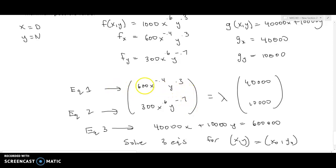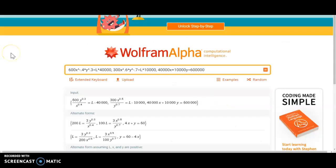This is going to be a challenging system of equations to solve, so we're going to move over to Wolfram Alpha, and we're going to have Wolfram Alpha compute the x and y that satisfy all three of these equations. And so here we have it all entered in: 600x^(-0.4)y^(0.3) = λ times 40,000. I'm using just a capital L here - you can use any letter that you want, but capital L reminds me that it's lambda. And then comma, the next equation: 300x^(0.6)y^(-0.7) equals the same lambda times 10,000. Comma, our constraint: 40,000x + 10,000y = 600,000.